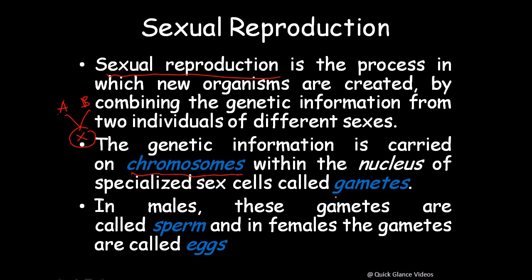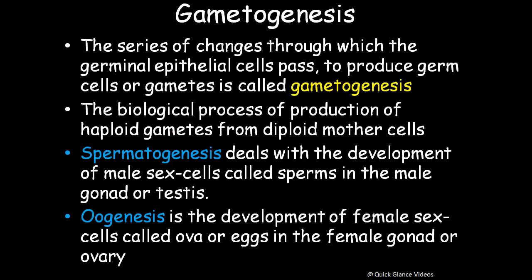The genetic information is carried in chromosomes within the nucleus of specialized cells called gametes. In males these gametes are called sperms, and in females they are called eggs or ova. Gametogenesis is the series of changes through which germinal epithelial cells pass to produce germ cells or gametes — the biological process of producing haploid gametes from diploid mother cells.